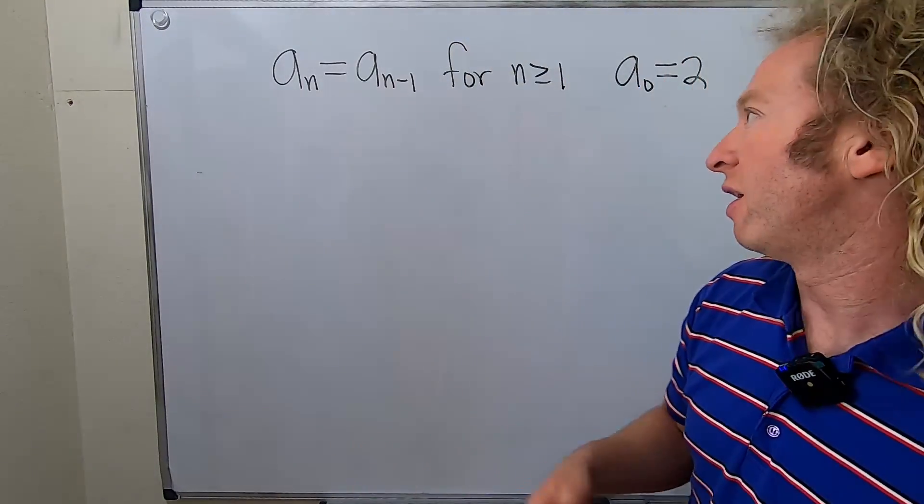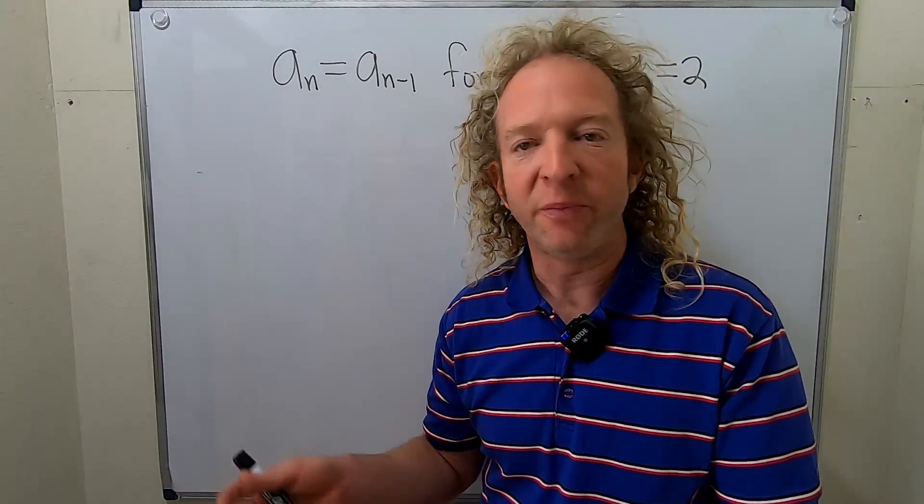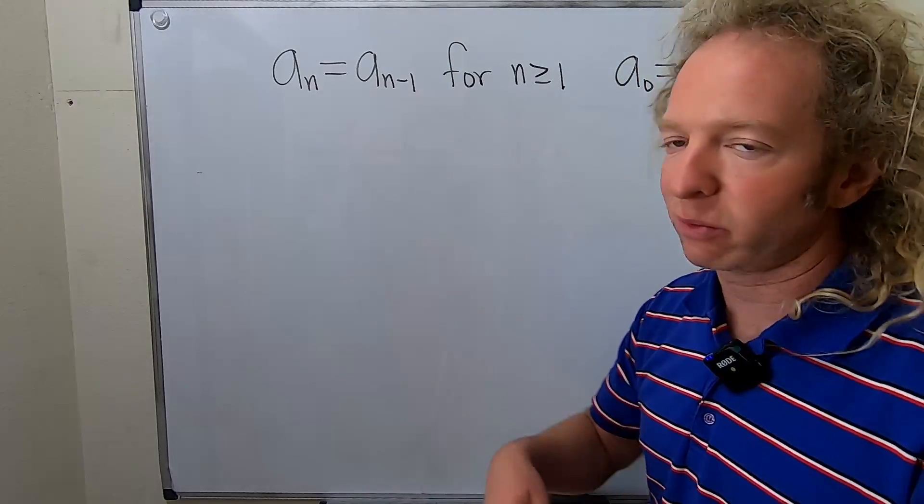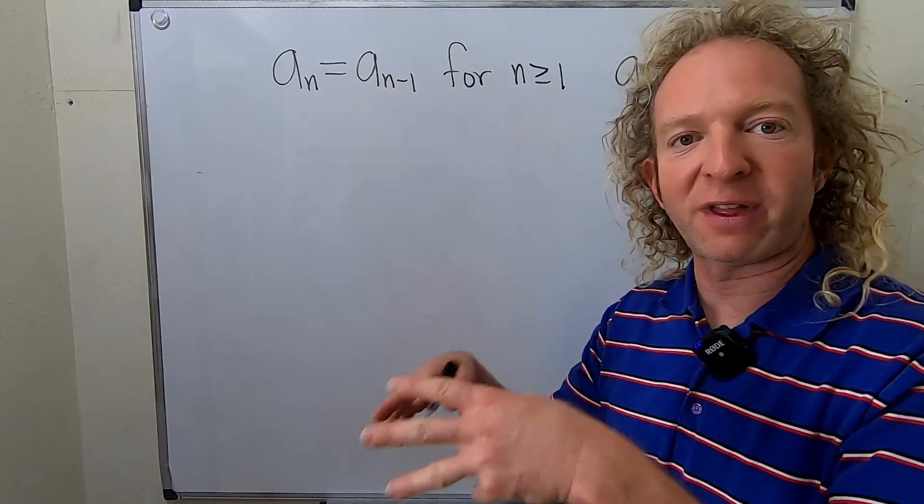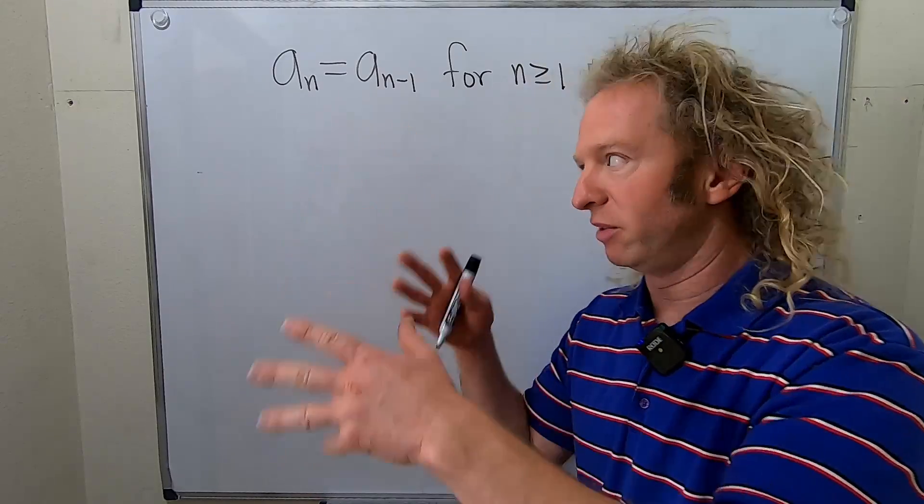These come about for various reasons in mathematics. Counting is one example where you might see recurrence relations. You have a counting problem and you can model it with a recurrence relation and then you solve that relation. Basically you solve the counting problem using these techniques.